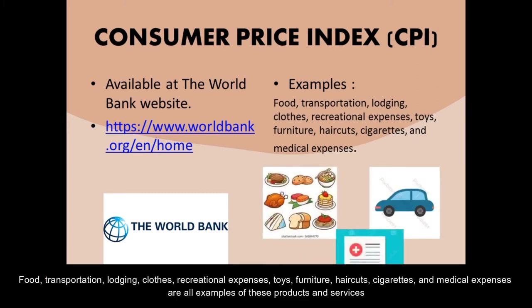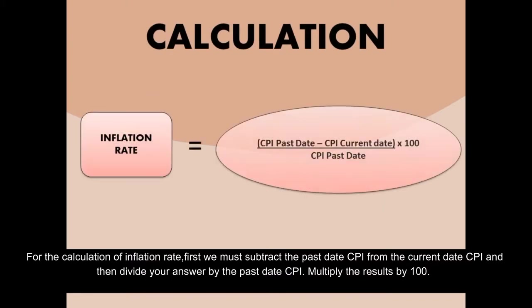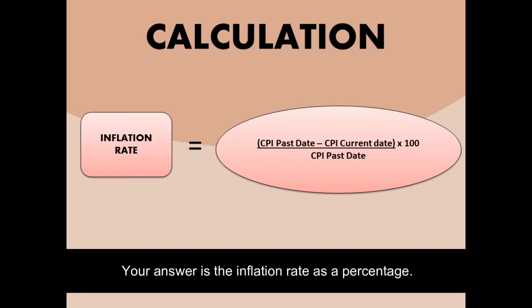Food, transportation, lodging, clothes, recreational expenses, toys, furniture, haircuts, cigarettes, and medical expenses are all examples of the products and services included in the CPI basket. The data on Consumer Price Index of every country are available at the World Bank website. To calculate the inflation rate, first subtract the past-date CPI from the current-date CPI, then divide that answer by the past-date CPI, and then multiply the result by 100. Your answer is the inflation rate as a percentage.